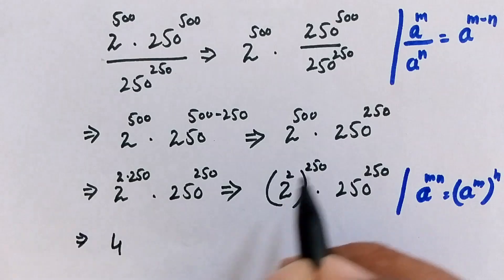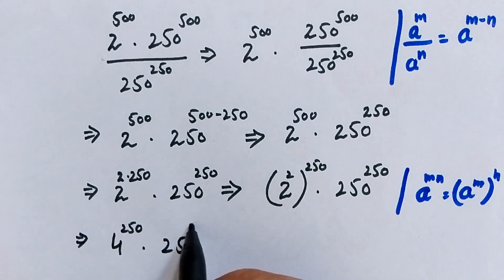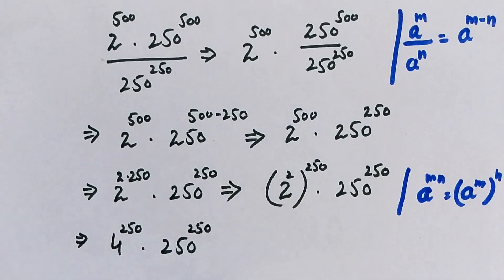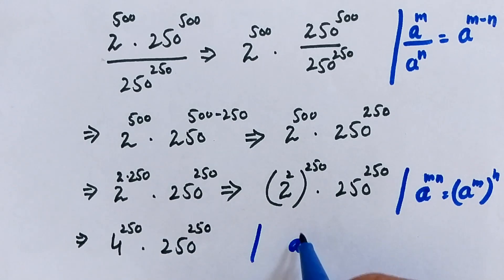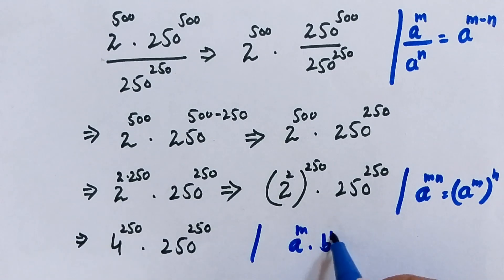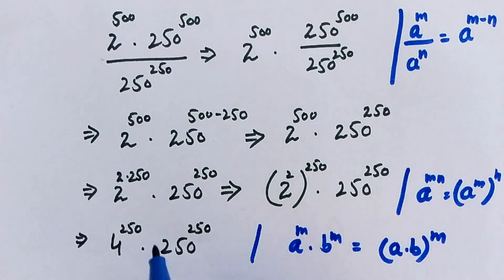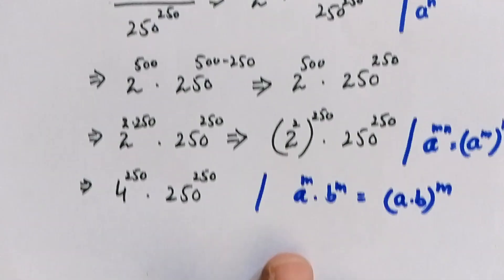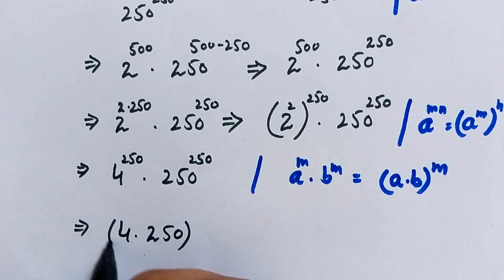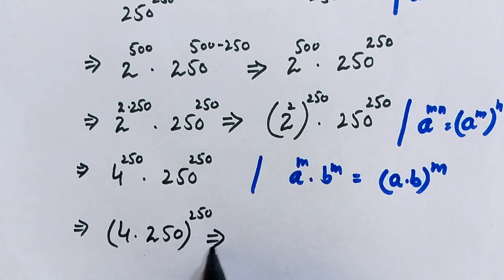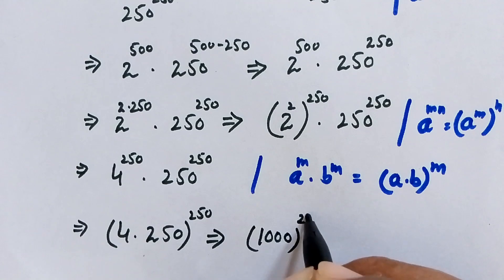Since 2 squared equals 4, we have 4 to the power of 250 times 250 to the power of 250. The powers are the same — both 250 — so we apply the rule a to the power of m times b to the power of m equals (a times b) to the power of m. This gives us (4 times 250) to the power of 250, which is 1000 to the power of 250.